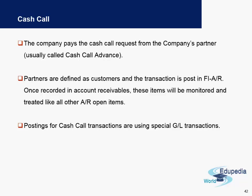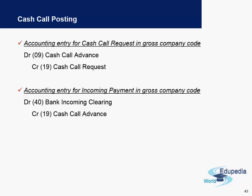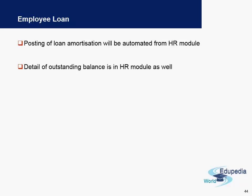A company also pays the cash call request from the company's partner — usually called a cash call advance. Partners are defined as customers and the transaction is posted in financial accounting accounts receivable. In a cash call posting, the cash call advance account is debited and the cash call request is credited. During the incoming payment of this amount, the debit is done to the bank account and the credit is made to the cash call advance account, thus nullifying it.